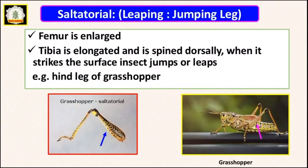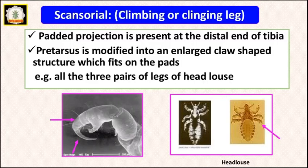The next type is saltatorial legs, called leaping or jumping legs. In this type, the femur is enlarged and modified, whereas the tibia is elongated, and its spines strike the surface dorsally so the insect jumps and leaps. For example, in grasshoppers, the hind legs are used for leaping or jumping purpose and are called saltatorial legs.